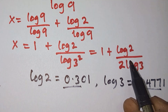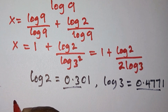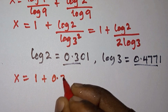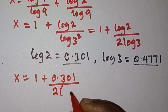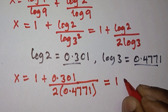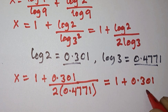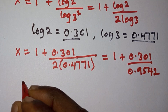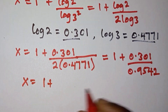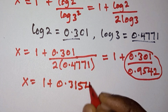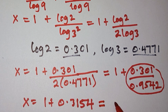Now let's substitute these values. So we're going to have x is equal to 1 plus 0.301 divided by 2 times 0.4771. We can simplify this as 1 plus 0.301 divided by 0.9542. So x is equal to 1 plus 0.3154, which gives us x is equal to 1.3154.